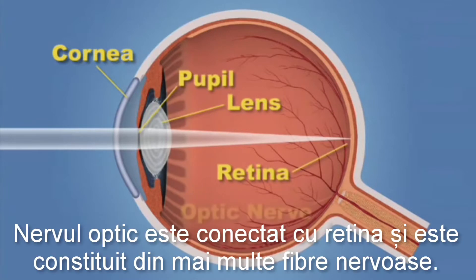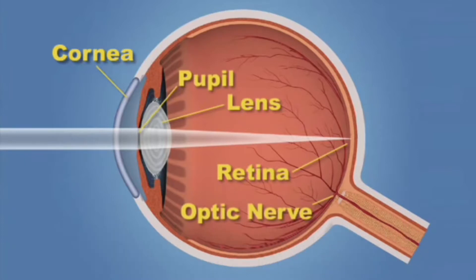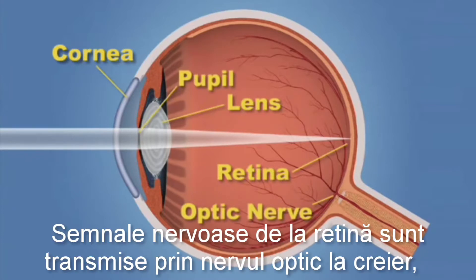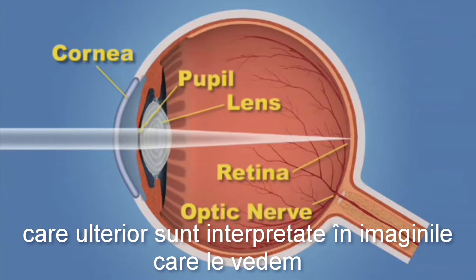The optic nerve is connected to the retina and is made up of many nerve fibers. Signals from the retina are sent through the optic nerve to the brain, where they are interpreted as the images we see.